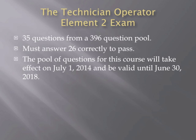The Technician Class Operator Element II Examination is made up of 35 questions from a roughly 396-question pool. In order to pass the exam, you have to answer 26 of those 35 questions correctly. The pool questions for this course will take effect on July 1st, 2014, and are valid until June 30th, 2018.